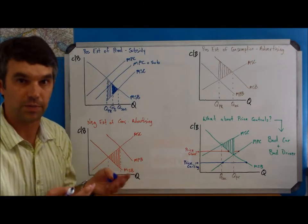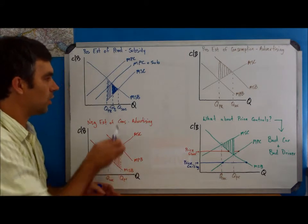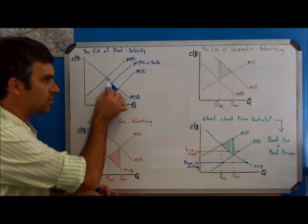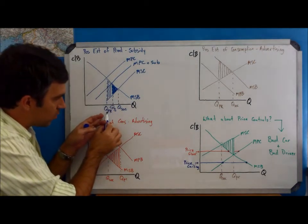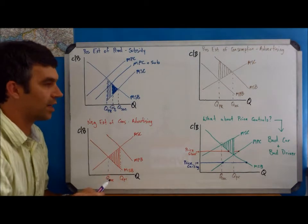Think about the telephone game that maybe you played as a kid. So yes, we want to reduce the size of this positive externality because we want to get this quantity closer to what society wants.